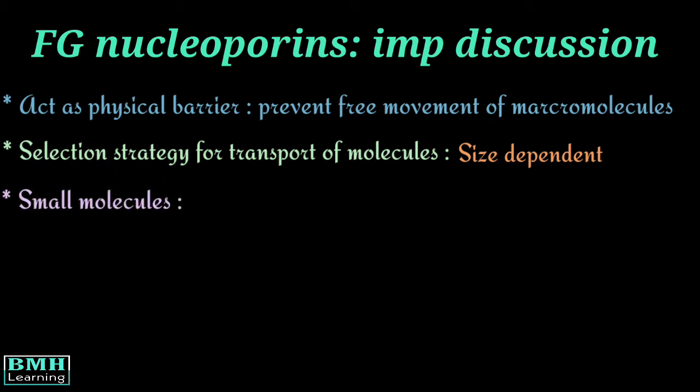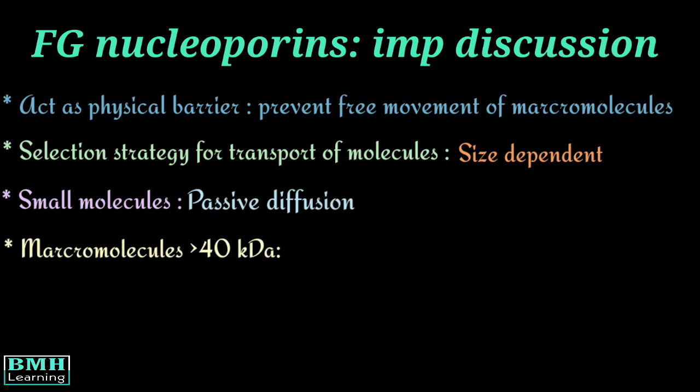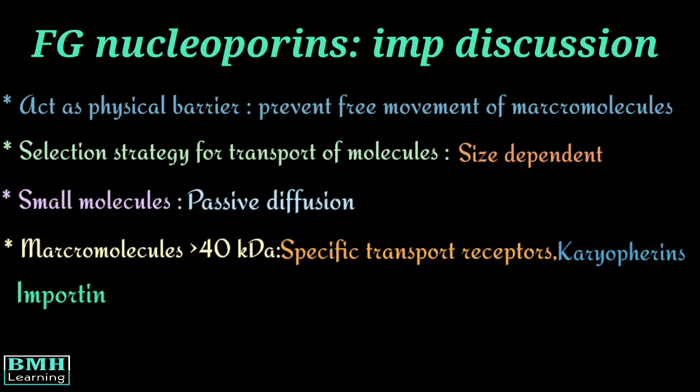Generally, the small molecules pass through the nuclear pores via passive diffusion. But the macromolecules which are larger than 40 kDa, they need specific transport receptors known as karyopherins. In this case, it's importin. This is what an FG nucleoporin does.